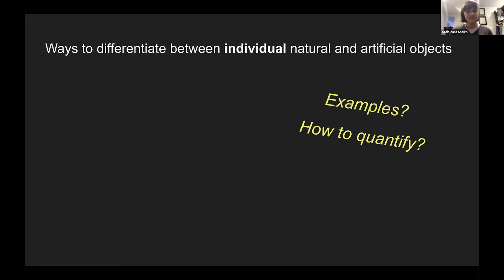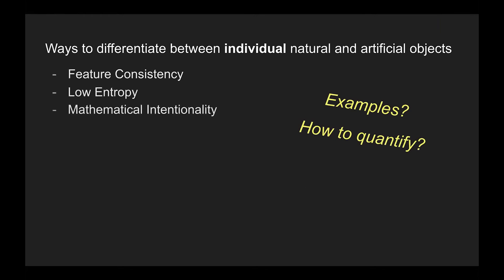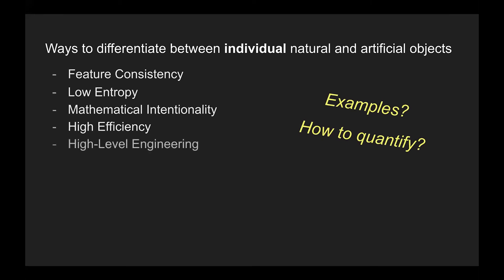I'm interested in ways to differentiate between individual natural and artificial objects. This is my brainstorm so far: consistency of features in an object; entropy; maybe mathematical, intentional structures like regular polygons or right angles. Things that are very efficient tend to be technological. Maybe if we find an object that requires a tool to make it, that requires a tool to make that — the more cycles of that you have, the more indicative of technology.